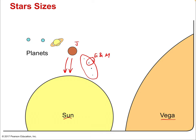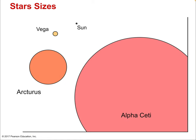Consider a main sequence star like Vega — a very large main sequence star burning blue and hot. It's still a hydrogen-fusion star, but it doesn't compare to dying stars like Arcturus and Alpha Seti, which are massive because they're dying. Their outer layers are expanding as their core collapses — they become massive and very bright. The sun would just be a small black dot in comparison to these massive stars.